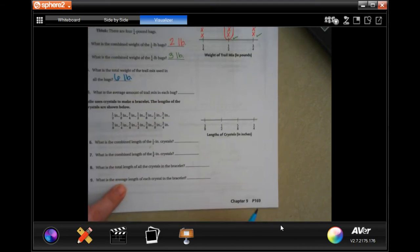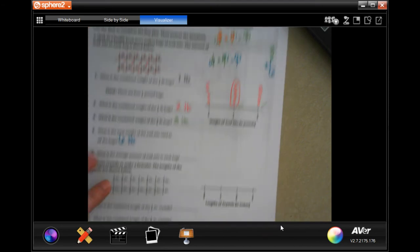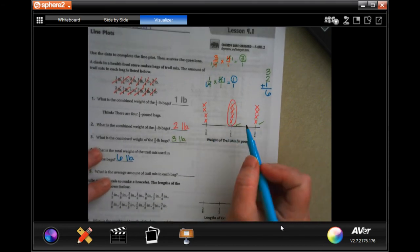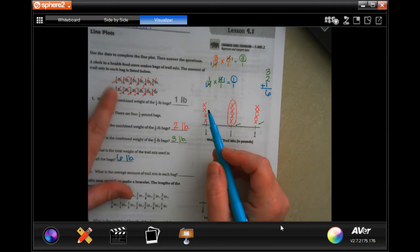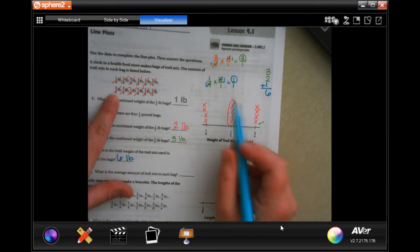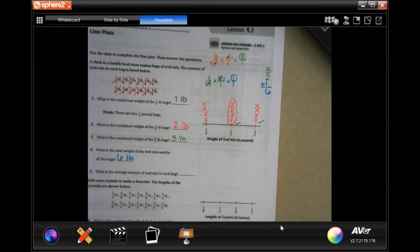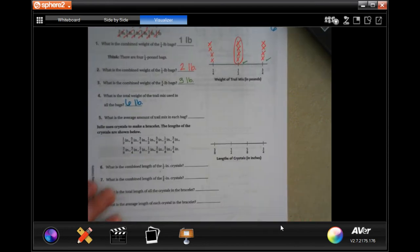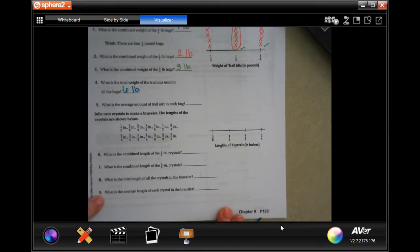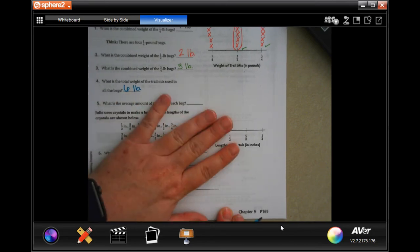That's what you guys are going to do for these ones. You're going to go ahead, you're going to add them all up. Make sure that when you're putting your X's that you cross them off as you go, so that you don't miss one or not add one that you need to. You are going to do six, seven, eight, and nine. Those all have to do with this chart right here.